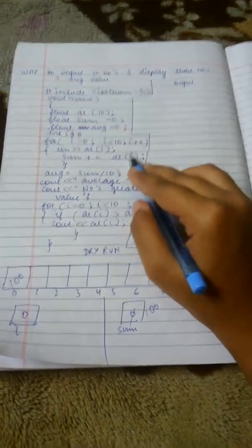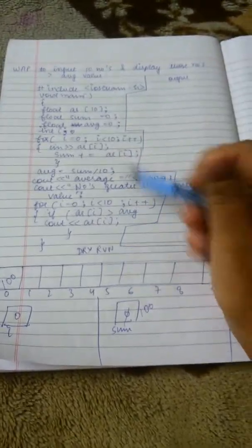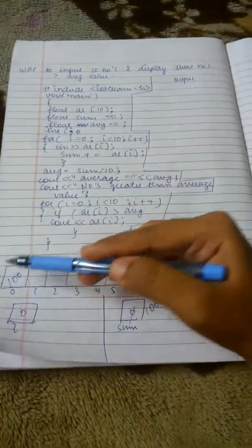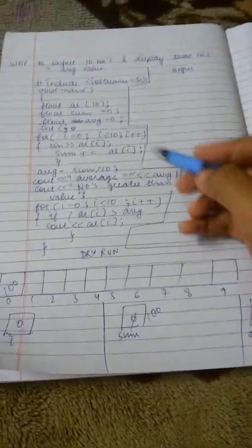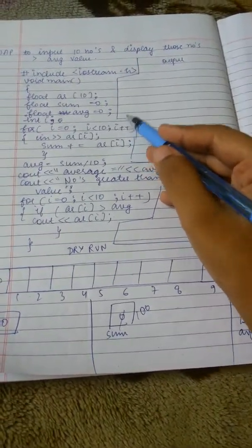Why? Because sum equals sum plus ar[i]. Here it is: sum is 0, ar[0] is 100, then 100 plus 0 is 100. It will get incremented. i will get incremented to 1.